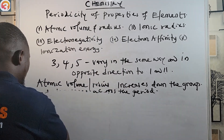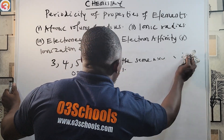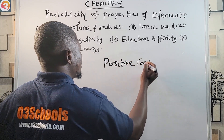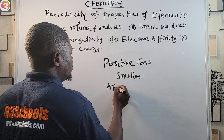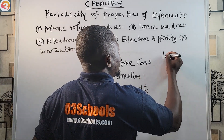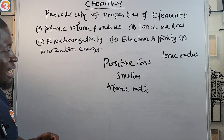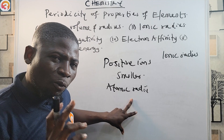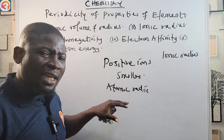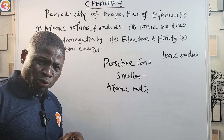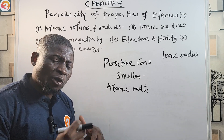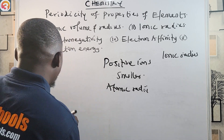The ionic radius of positive ions is smaller than the corresponding atomic radii. A positive ion is formed when a metal atom loses electrons. For example, sodium has 11 electrons.